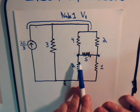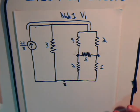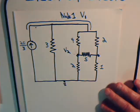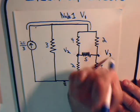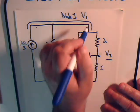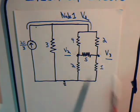Here we have another node where three branches connect — that's node 2, at potential V2. And here we have another node where three branches connect — that's node 3, at potential V3. So our job initially is to determine V1, V2, and V3. We'll set up the equations using the format approach developed in previous videos.